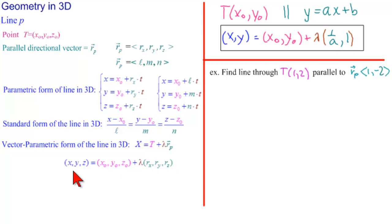Well, the first thing we would do is use our formula from down here. So we would have x, y equals, and here x0, y0 is 1, 2, plus lambda is our parameter, and then times, and we would have 1 minus 2.